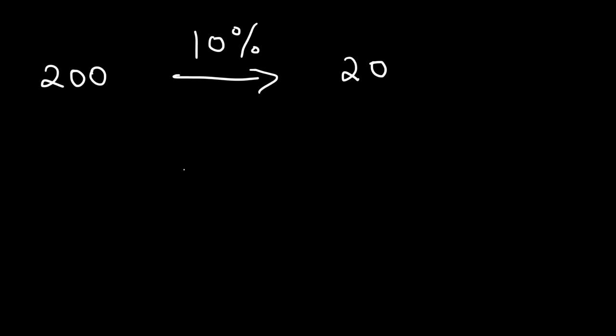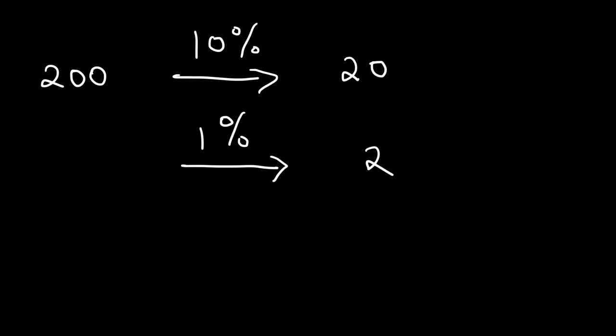So knowing that, what is 1% of 200? 1% of 200 is basically 10% of 20, which means you move the decimal two units to the left. It turns out it's 2, and knowing this can help you find the percent of any number.